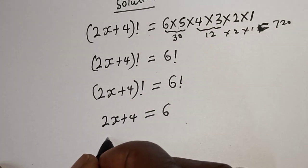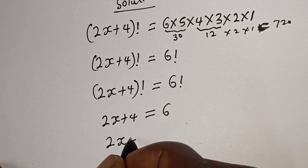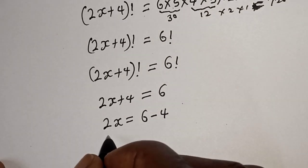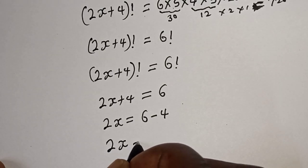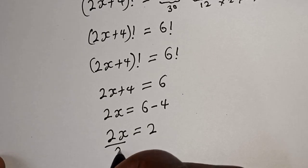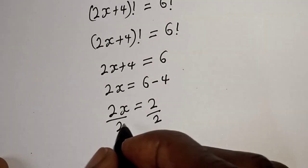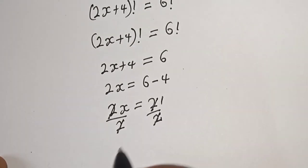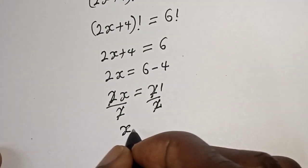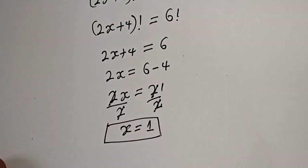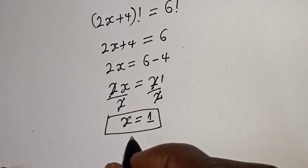2x is equal to 6 minus 4. 2x is equal to 2. Let's divide both sides by 2, divided by 2, and this will cancel this 2. Here 1, 2 here 1. x is equal to 1.